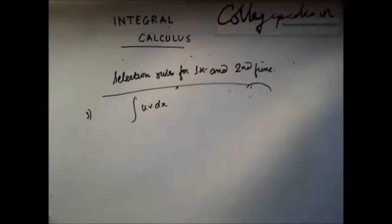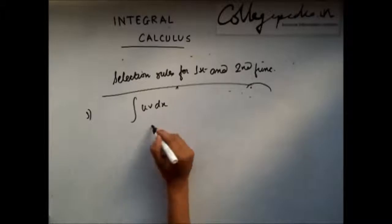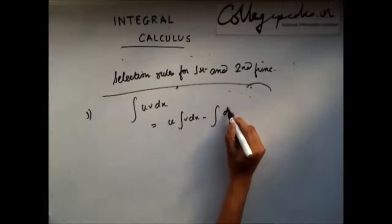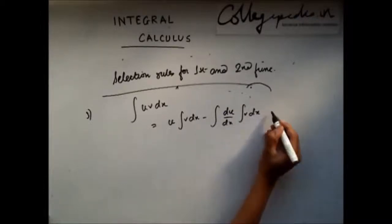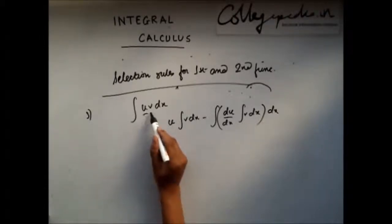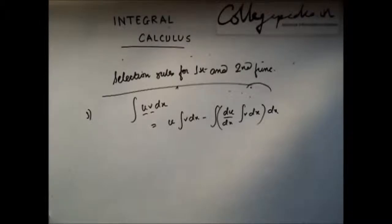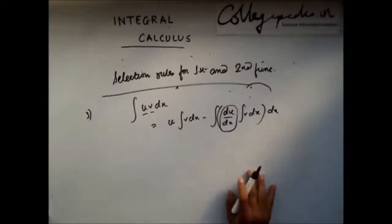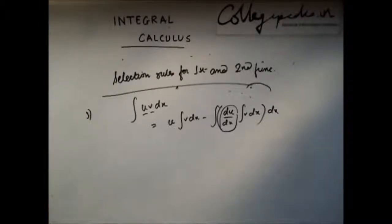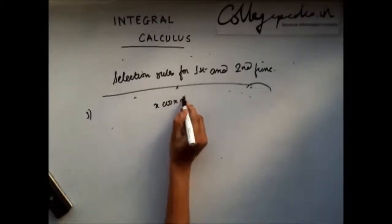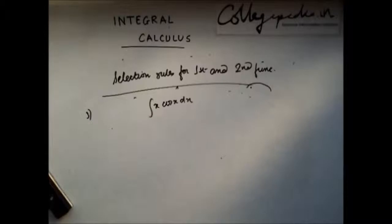In that case, the first function is chosen in such a way that the derivative of the function then obtained is easily integrable. Now I have landed in a situation where I know the integration of both u and v, so I'll choose as the first function the one whose differentiation is easily integrable. For example, let's take x cos x dx.